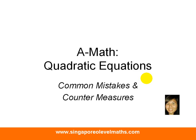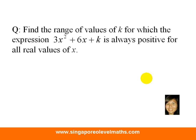Let us now take a look at the question. Find the range of values of k for which the expression 3x² + 6x + k is always positive for all real values of x.